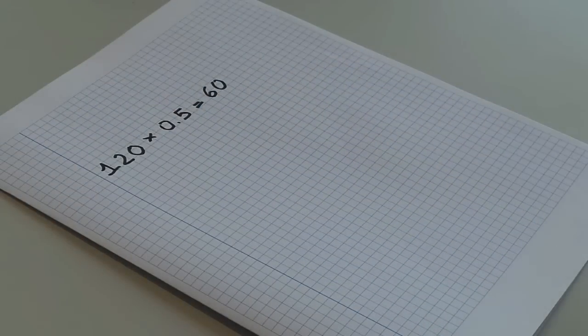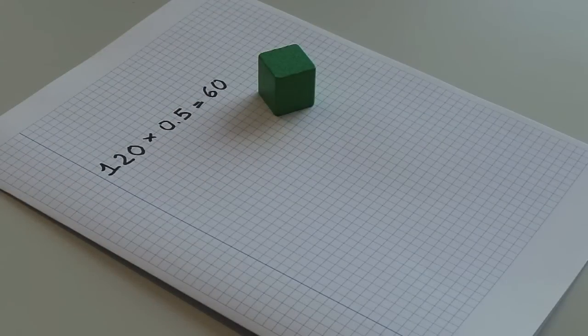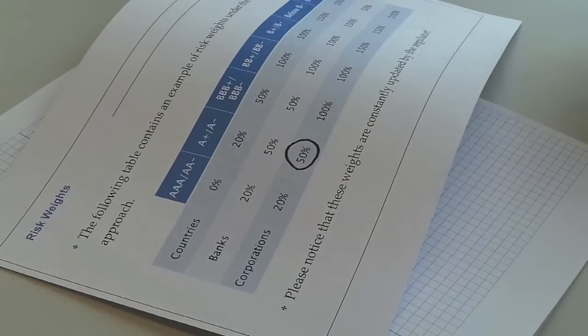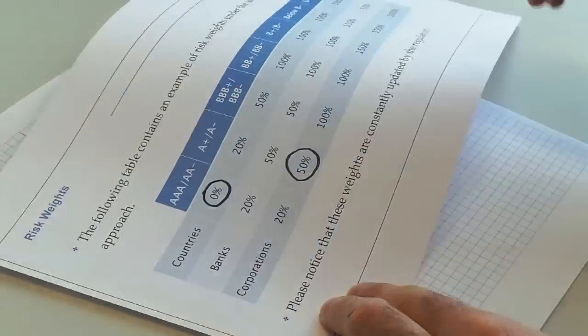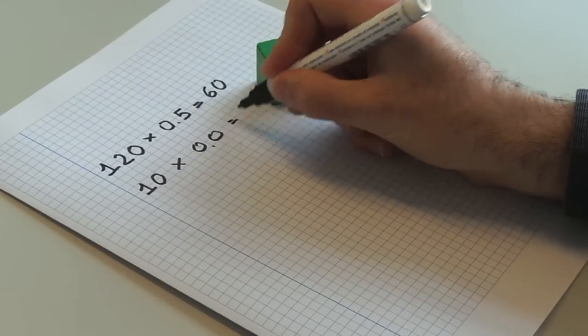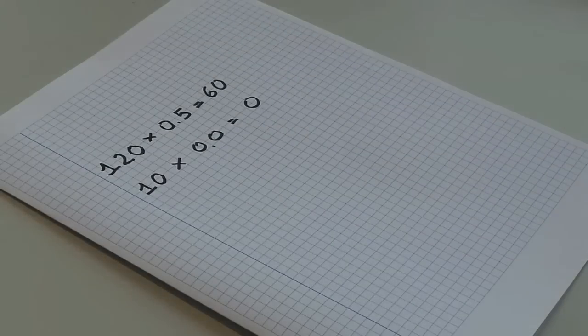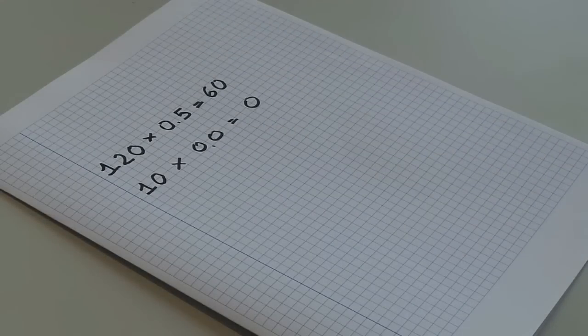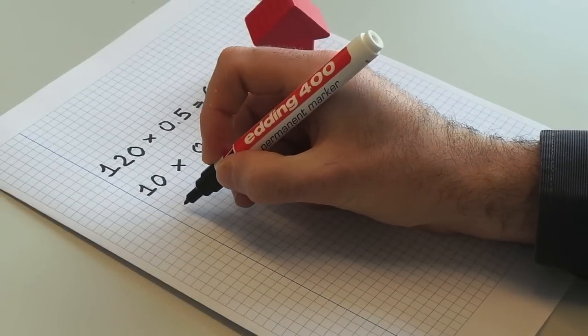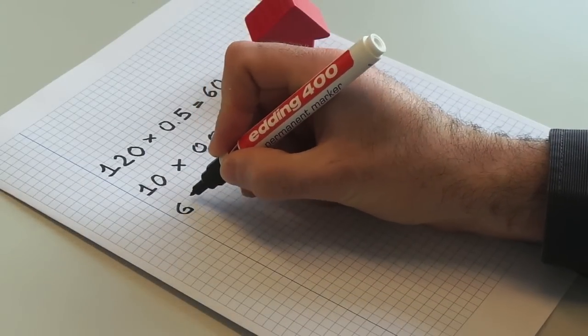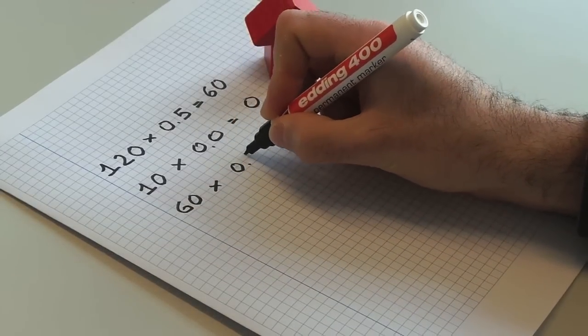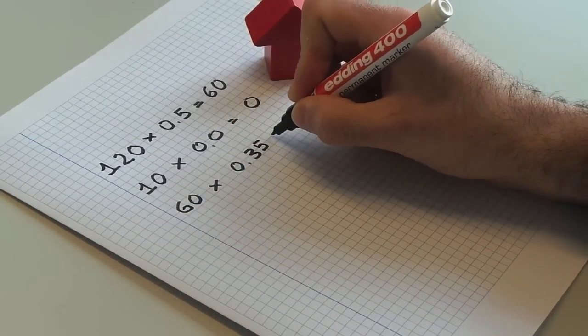Then we consider government bonds. In this case, the risk weight for AA bonds is 0 percent, hence 10 times 0 is 0. Finally, we have 60 million euros times 0.35, the risk weight for residential mortgages. The result is 21 million euros.